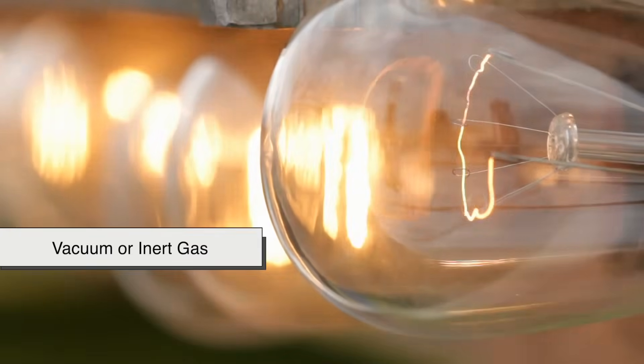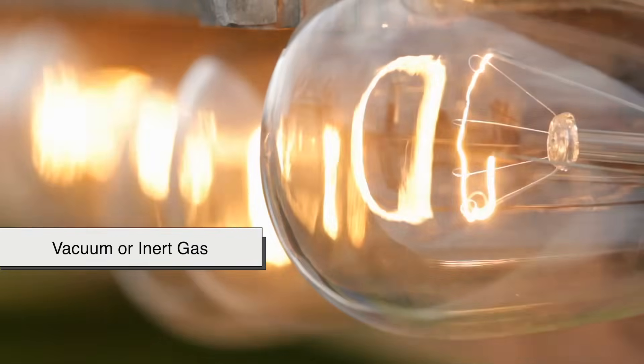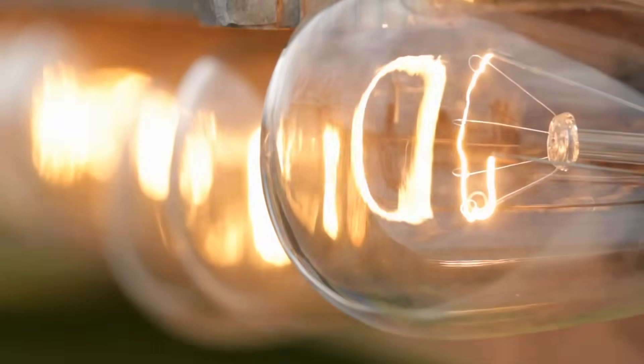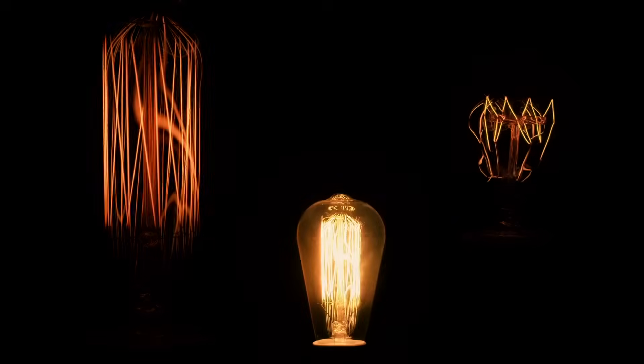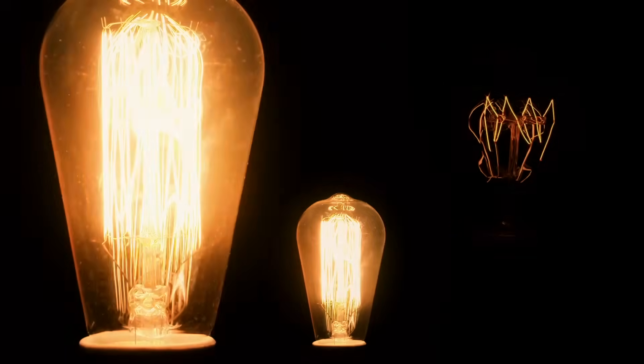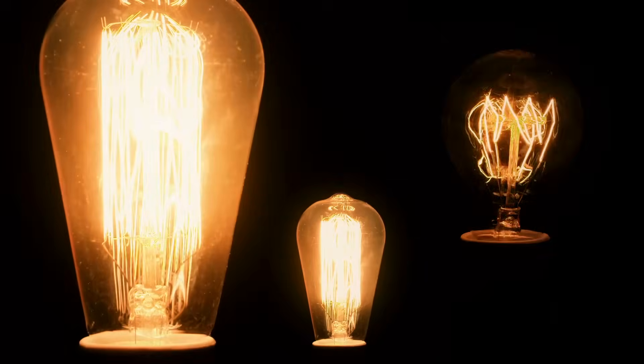Also, the vacuum or inert gas inside the bulb helps prevent the tungsten from oxidizing. If oxygen were present, the tungsten would react violently and disintegrate in seconds. By removing oxygen, we let the filament heat up in peace without any combustion.